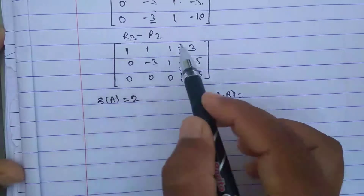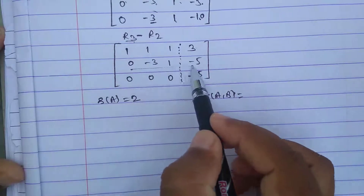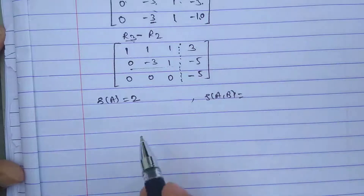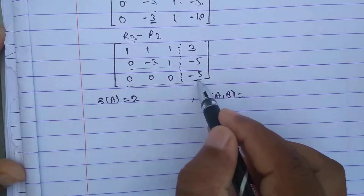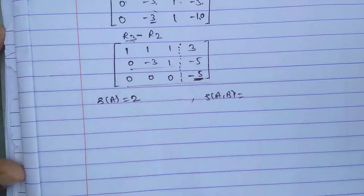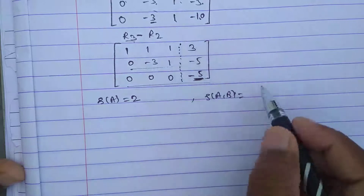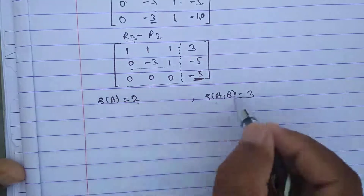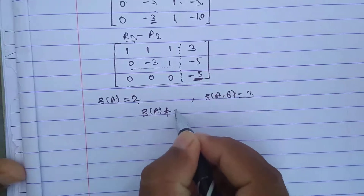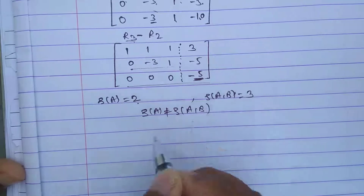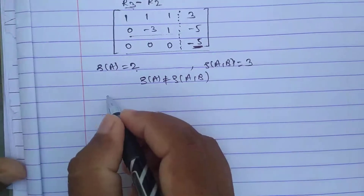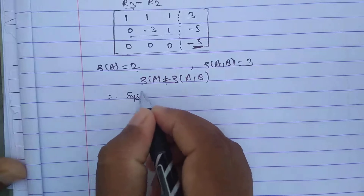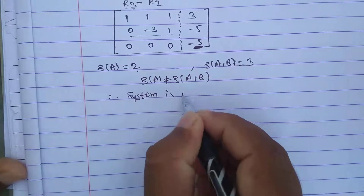For rank of [A|B], we count non-zero rows in the whole matrix. Row 1 is non-zero, row 2 is non-zero, and row 3 is also non-zero because at least one element is non-zero. So rank of [A|B] equals 3. Since rank of A equals 2 and rank of [A|B] equals 3, the ranks are not equal.